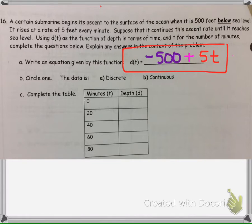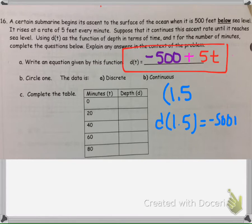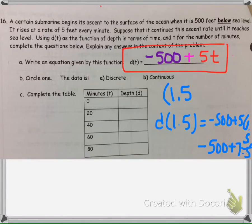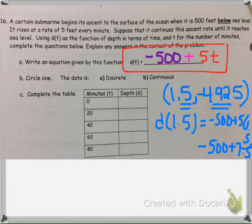Then we're asked if this data is discrete or continuous. Since we can have one and a half minutes, we can find what the depth of the submarine is in one and a half minutes. It is possible to plug in a decimal: negative 500 plus 5 times 1.5. Since the submarine is continuously rising, it would be negative 492.5 feet below sea level. Since this data point is possible and involves decimals, that is why it's continuous — it's measurable.